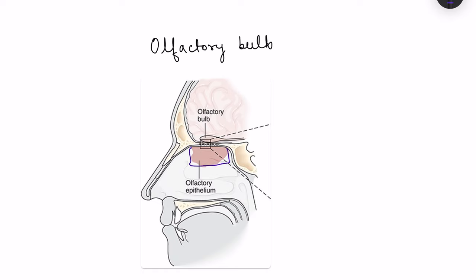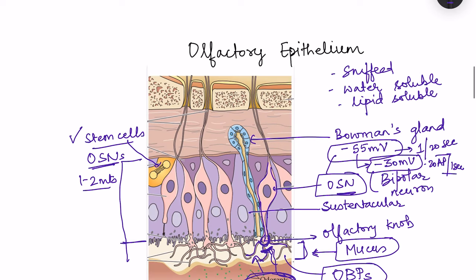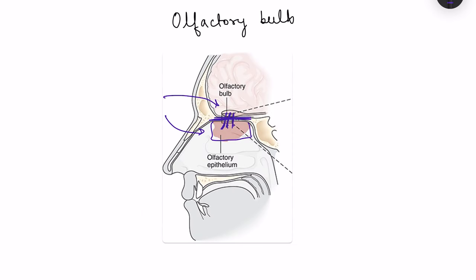Binding of odorants to receptors on the dendrites of olfactory sensory neurons generates action potentials. The axons of these neurons then cross the cribriform plate, which is present in the ethmoid bone and separates the nasal cavity from the cranial cavity. There are perforations in the cribriform plate, and the axons cross through these perforations to reach the cranial cavity, where the olfactory bulb is located just above the cribriform plate.